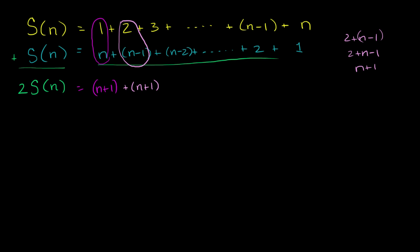And then this term over here, 3 plus n minus 2, or n minus 2 plus 3. Once again, that's going to be n plus 1. And you're going to do that for every term all the way until you get over here. n minus 1 plus 2, that's also going to be n plus 1. That's also going to be n plus 1. And then finally, you have n plus 1 right over here, plus n plus 1.